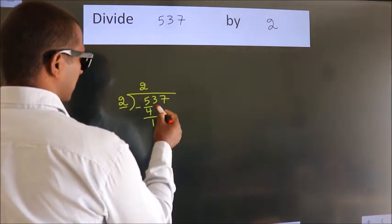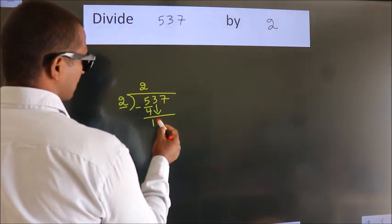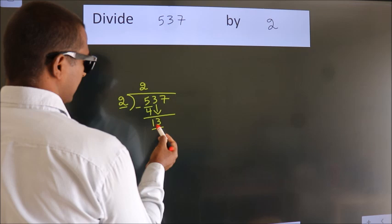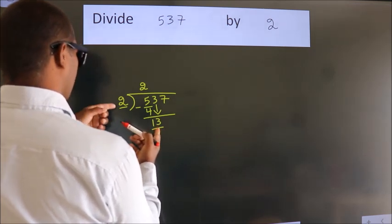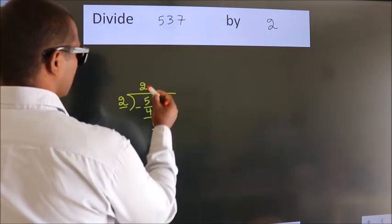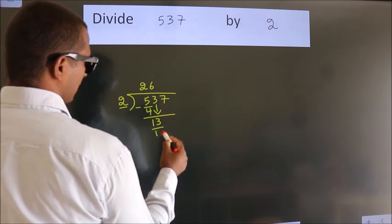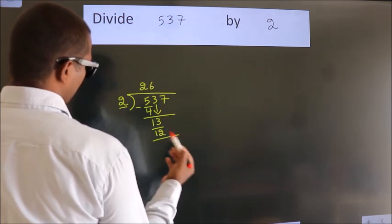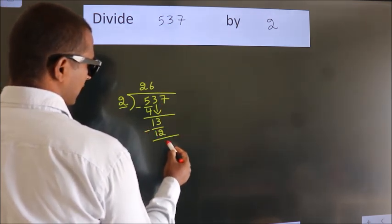After this, bring down the beside number. So 3 down. That's 13. A number close to 13 in the 2 table is 2 times 6, which is 12. Now we subtract and get 1.